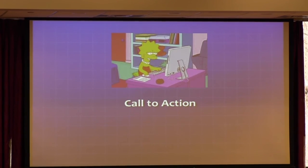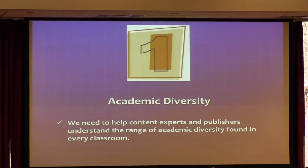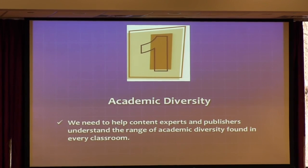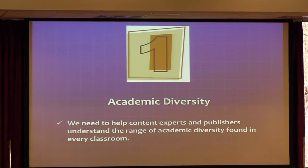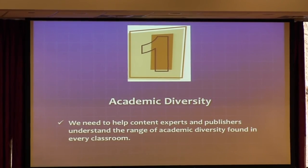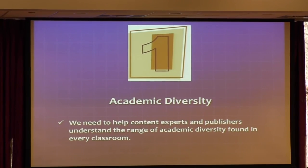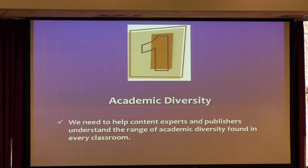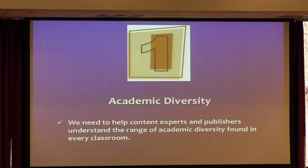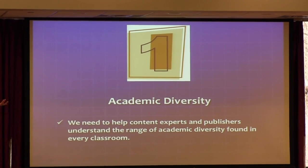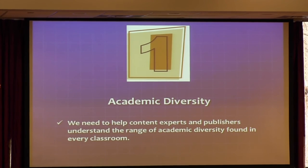Let me conclude with a call for action — five things to share. One: we need content experts and publishers to understand the range of academic diversity. If you are in the classroom, we need to find ways to describe this so it's meaningful. Research suggests that in the average third grade classroom there are seven reading levels — seven in third grade — and by fifth grade there are eleven. How do we think one-size-fits-all text is going to work? When I suggested three tiers, that's probably not enough even for fifth grade.